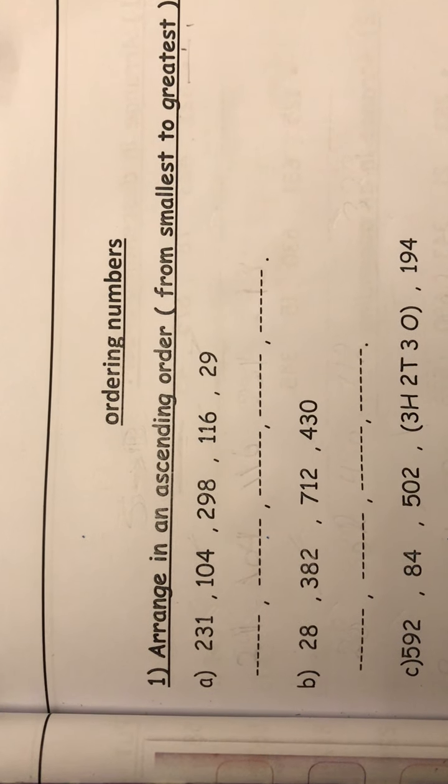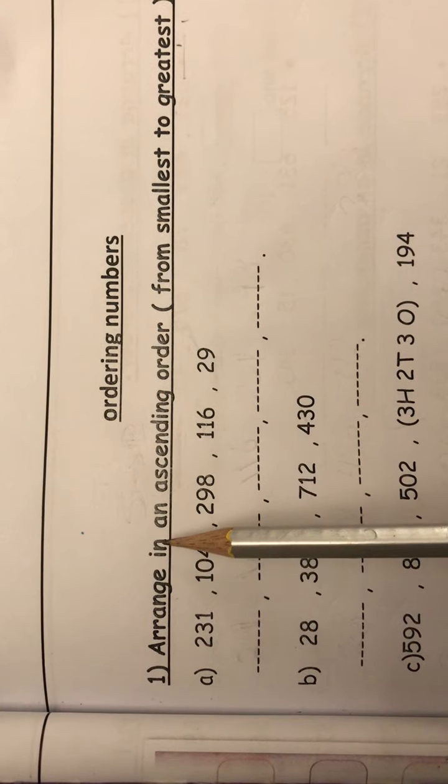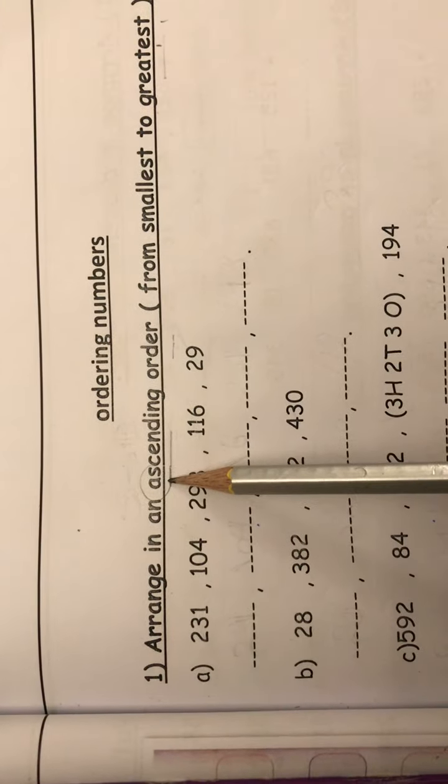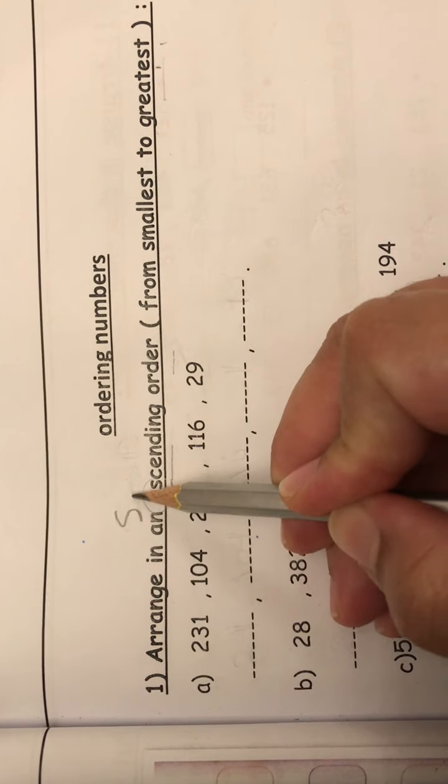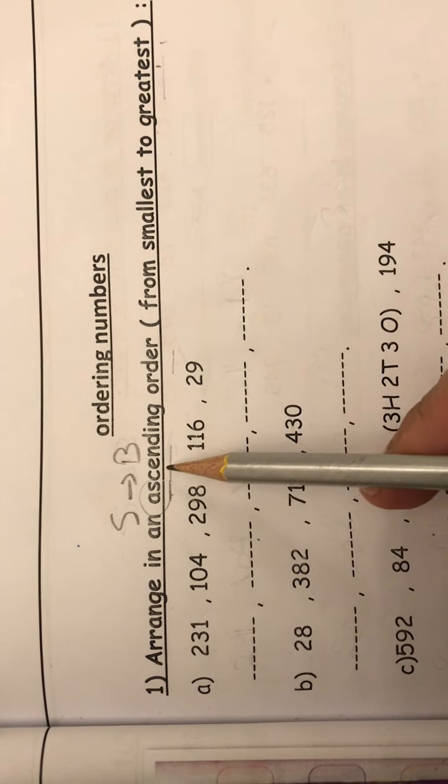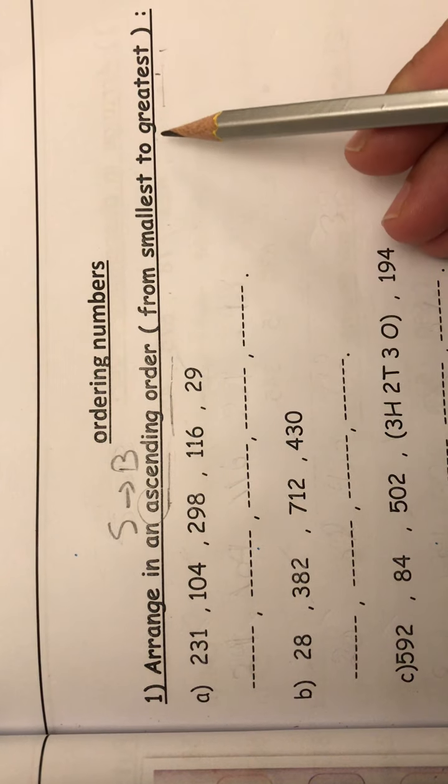Good morning, Juniors 2. Our lesson today is ordering numbers. Arrange in ascending order. Ascending starts with a small thing. So start with small to big. When you arrange in ascending order, it's from smallest to greatest.